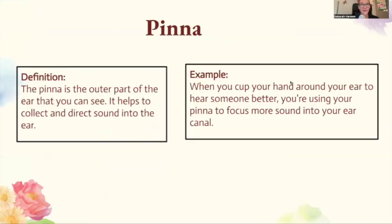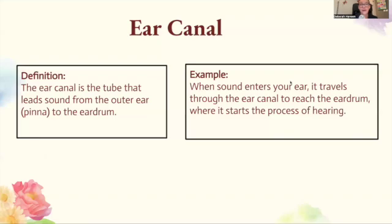The pinna is the outer part of the ear that you can see. It helps to collect and direct sound into the ear. So when you cup your hand around your ear to hear someone better, you're using your pinna to focus more sound into your ear canal. The ear canal is the tube that leads sound from the outer ear — the pinna — to the eardrum. When sound enters your ear, it travels through the ear canal to reach the eardrum where it starts the process of hearing.